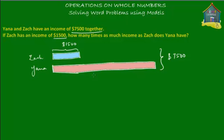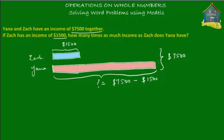From the model diagram, it's easy to find out Yana's income. We don't know what Yana's income is, but we can find out. It's a question mark, but from the model diagram we know it equals $7,500 minus $1,500. Together they make $7,500, and we take Zach's income out of that, so we're left with Yana's income, which equals $6,000. So Yana is making $6,000.